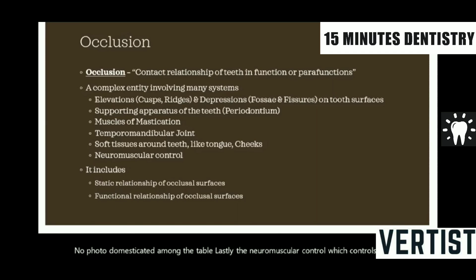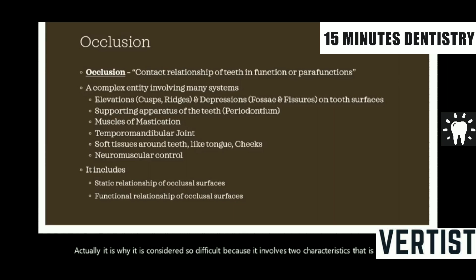Occlusion is actually considered so difficult because it involves two characteristics: occlusion is the relationship between upper and lower teeth in two different types — static, when they are completely occluded with each other, and functional, when the lower jaw is moving.